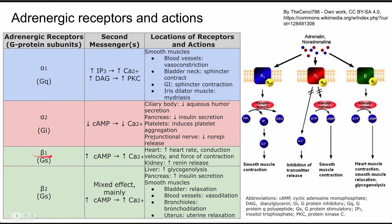Next is beta-1, which uses a Gs protein subunit — a stimulatory G-protein. The second messenger here is the opposite of the Gi: increased cyclic AMP and increased calcium ion concentration. This is an ionotrope. In the heart, you get increased heart rate, increased conduction velocity, and increased force of contraction. In the kidneys, you can have increased renin release.